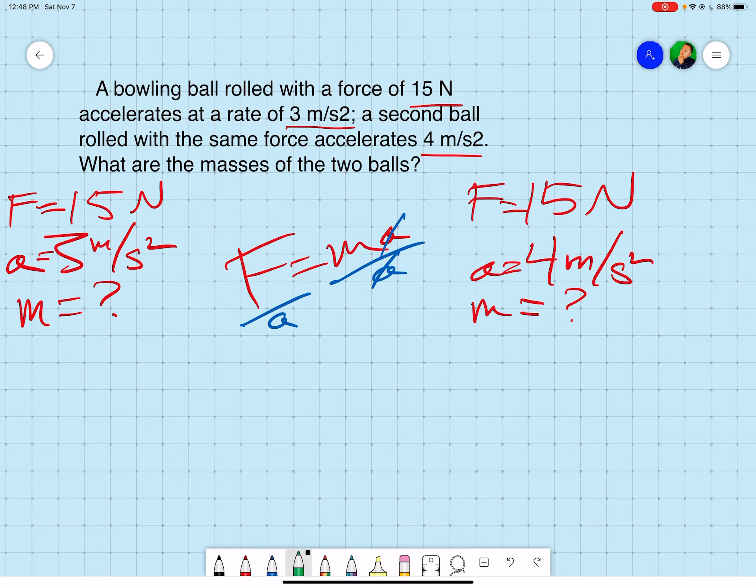Mass is equal to force divided by acceleration. So for the first one, my force is 15 and my acceleration is 3, so 15 divided by 3 is 5 kilograms. That's m1.